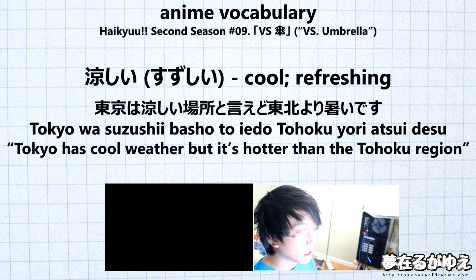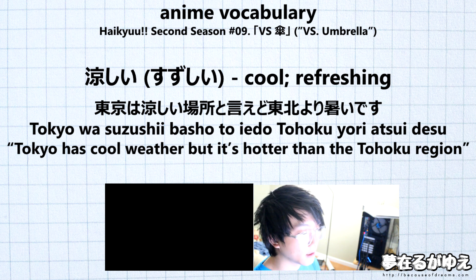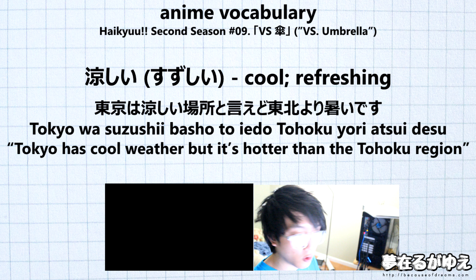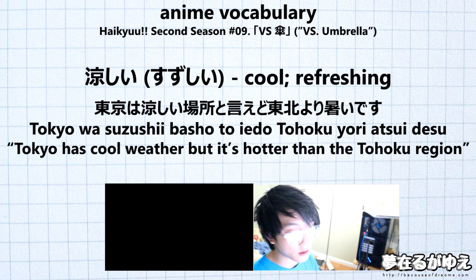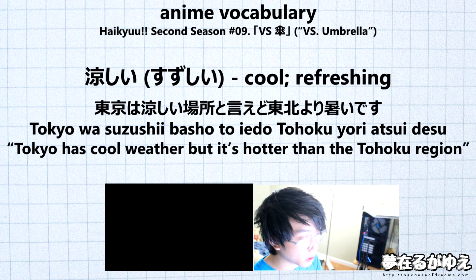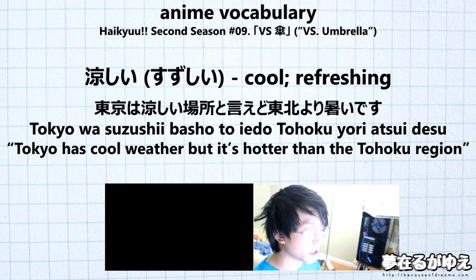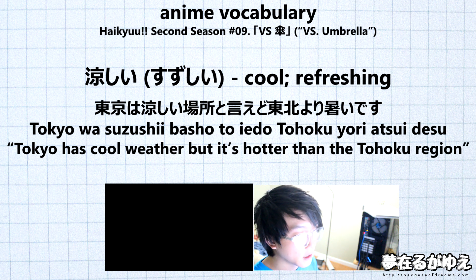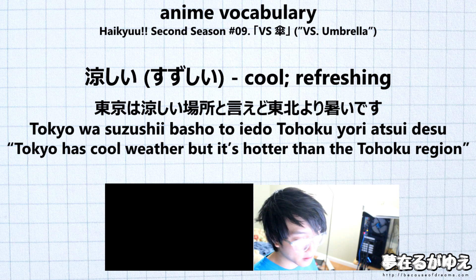Continuing the breakdown: to iedo means 'it can be said but,' so we have 'it can be said that Tokyo is a cool place but.' Then we have 'tohoku yori atsui desu.' Tohoku is a region of Japan, and the grammar pattern yori is used to compare things. So 'tohoku yori' means 'more than Tohoku,' and the thing that is more is Tokyo. Atsui means hot, so altogether it literally translates to 'it can be said that Tokyo is a cool place but it's hotter than the Tohoku region.' More naturally: 'Tokyo has cool weather but it's hotter than the Tohoku region.'